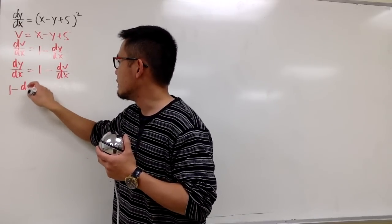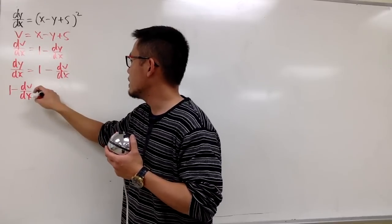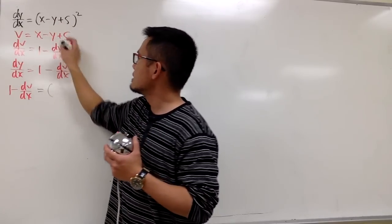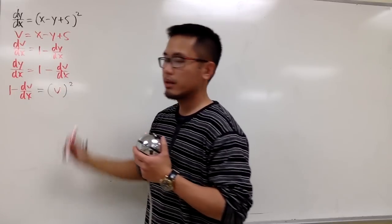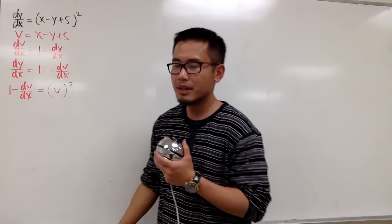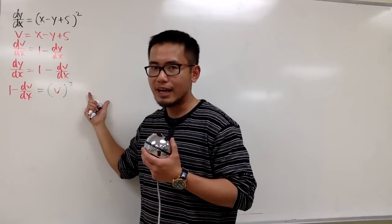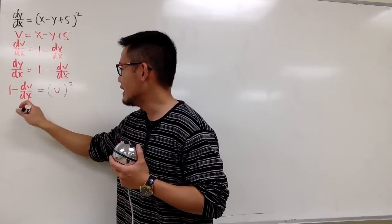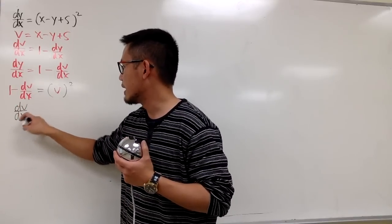I can plug this in for dy/dx. So we will have 1 minus dv/dx equals v squared, since the entire inside is v. Now let me move things around again. I want to make dv/dx positive, so I'll move terms around. We get dv/dx equals 1 minus v squared.